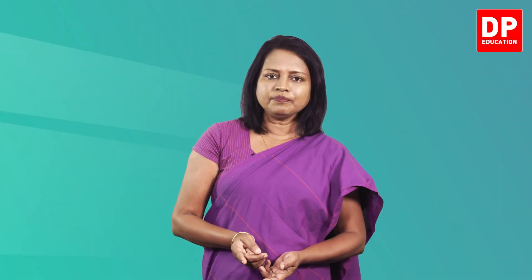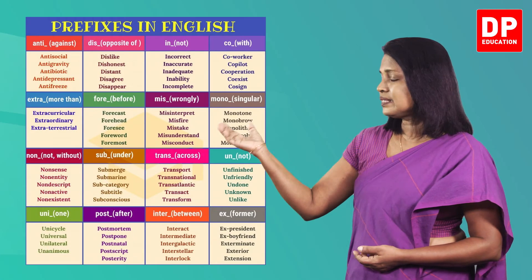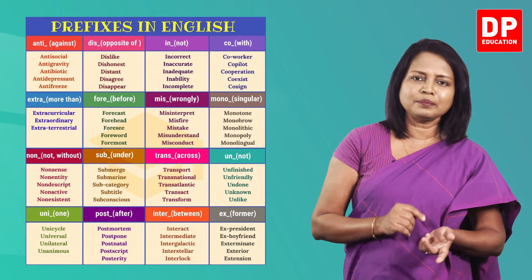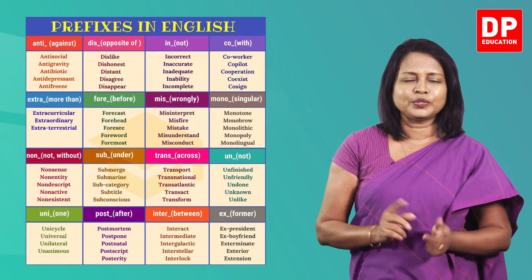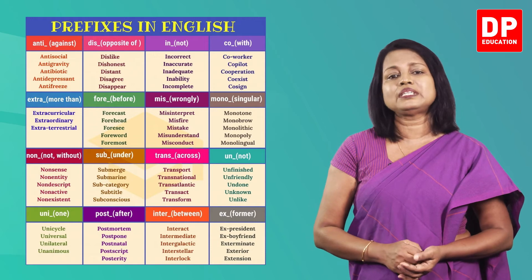In the same way, to form the negative, we can use different prefixes such as 'mis', 'un', and 'ir'. Here are some common prefixes with their meanings. You can refer to them whenever you need.